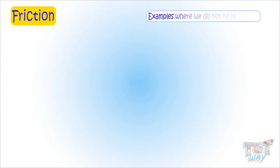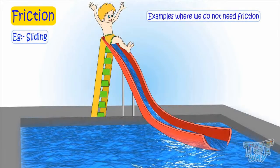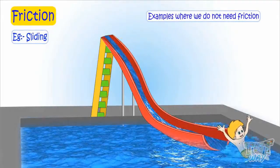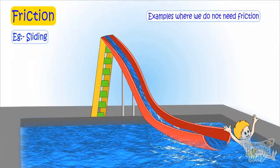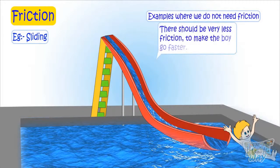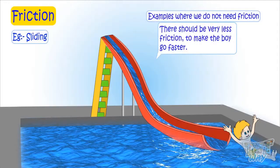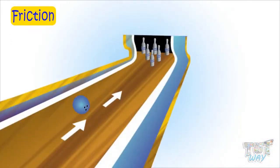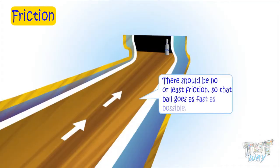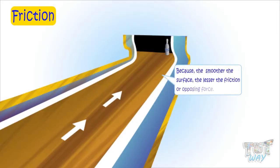Now let's see examples where we do not need friction. Here a boy wants to go faster to enjoy the ride, so friction should be very less. Here is another example: in this bowling game there should be no or least friction so that the ball goes as fast as possible. Because the smoother the surface, the lesser the friction or opposing force, and when there is no opposing force the ball is bound to go very fast.